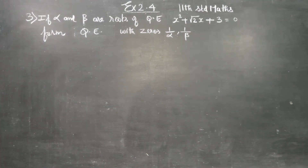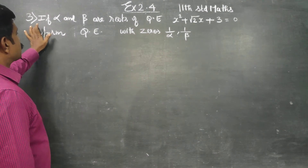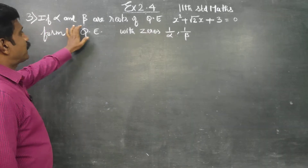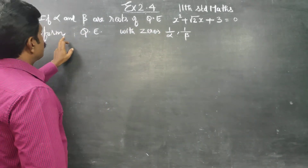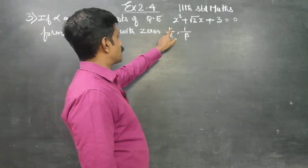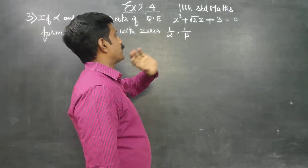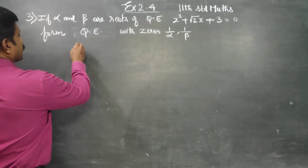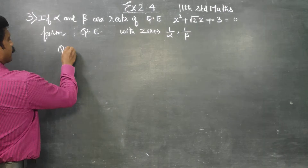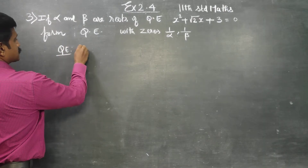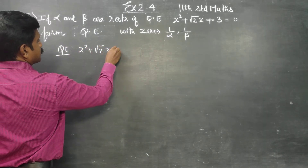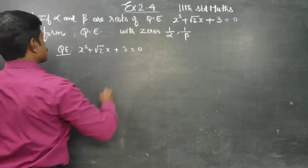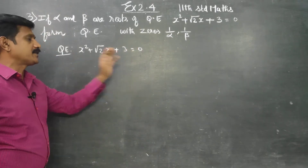Dear students, in exercise number 2.4, sum number 3: if alpha and beta are the roots of the quadratic equation, form a quadratic equation with zeros 1 by alpha and 1 by beta. The given quadratic equation is x squared plus root 2 x plus 3 is equal to 0.